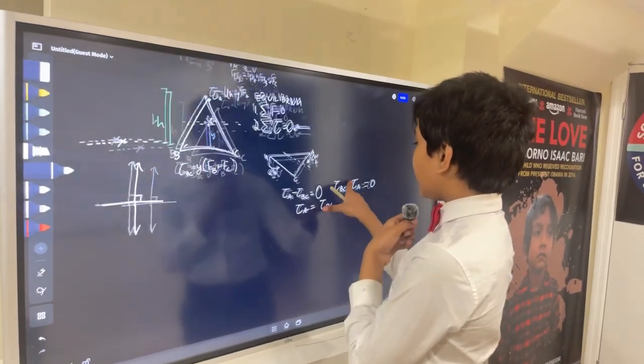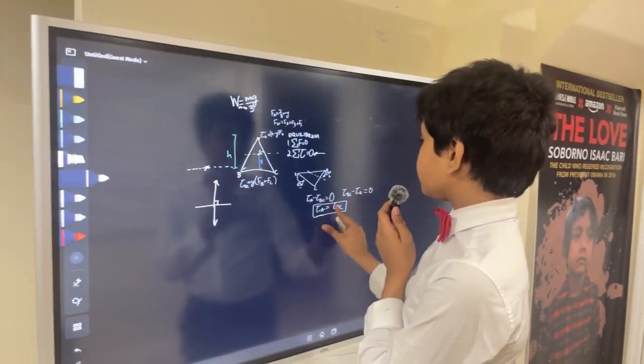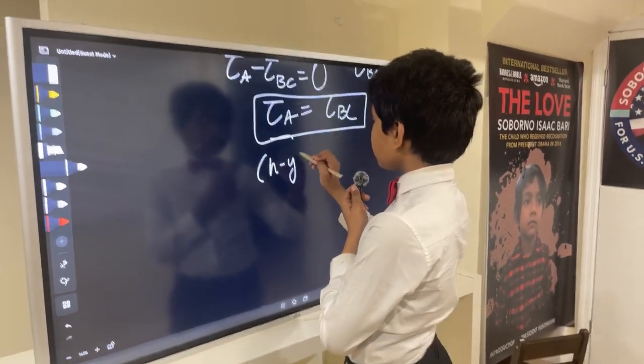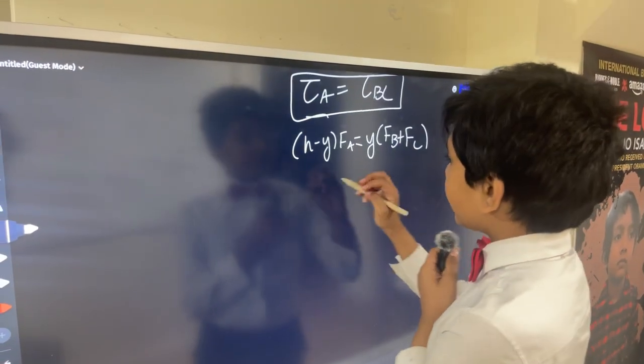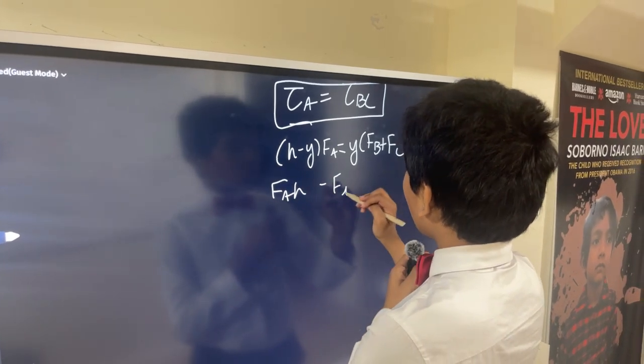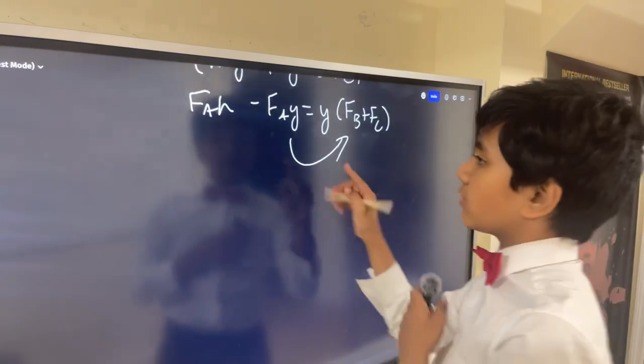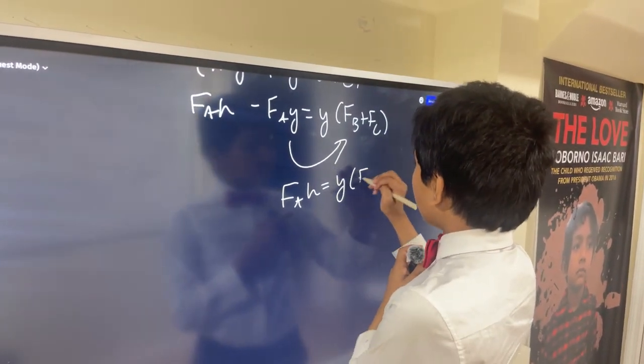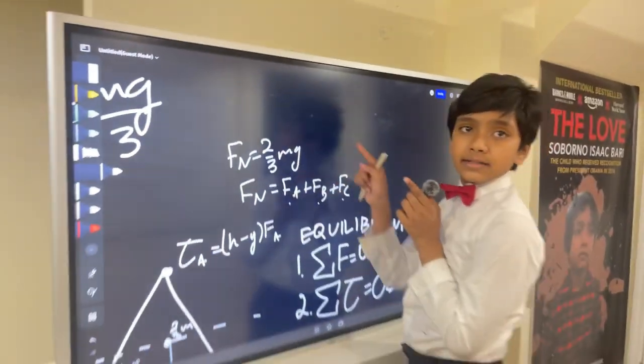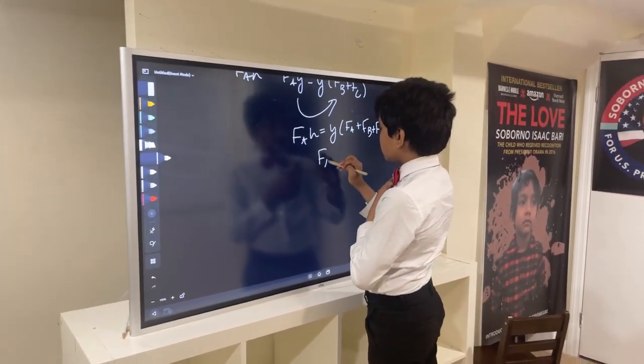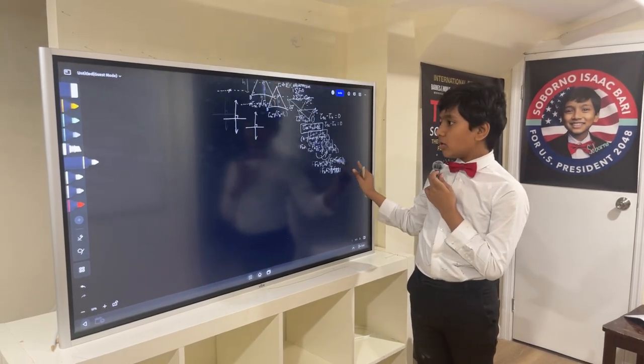We have this equation now: tau A equals tau BC. Tau A we said was h minus y times Fa, and tau BC was y times Fb plus Fc. That gives us Fa h minus Fa y equals y times Fb plus Fc. Bringing this to the other side, we get Fa h equals y times Fa plus Fb plus Fc. But what's Fa plus Fb plus Fc? As we said before, it's two-thirds Mg. So that means that Fa h is equal to two over three Mg y.